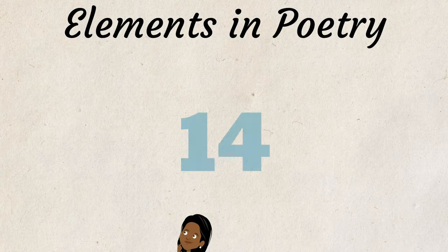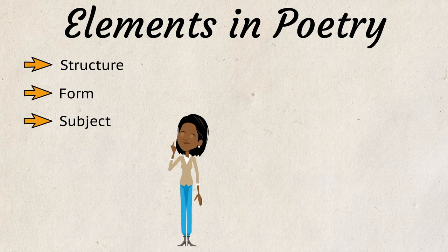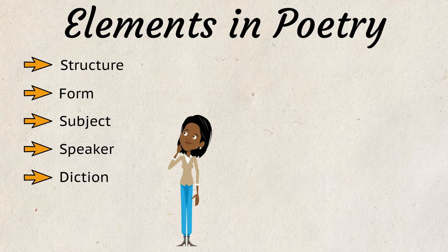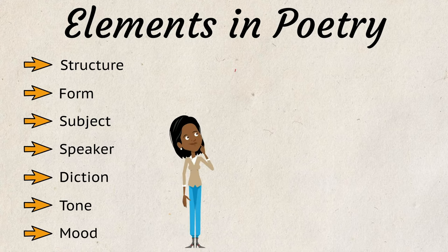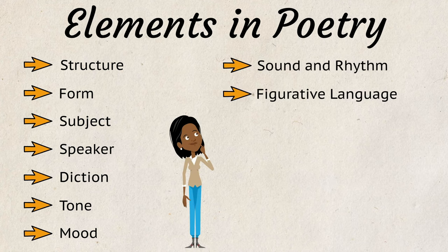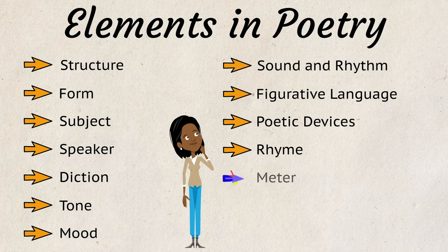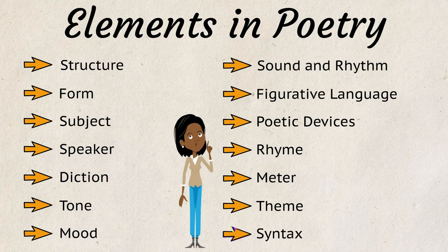The 14 elements are: structure, form, subject, speaker, diction, tone, mood, sound and rhythm, figurative language, poetic devices, rhyme, meter, theme, and syntax.